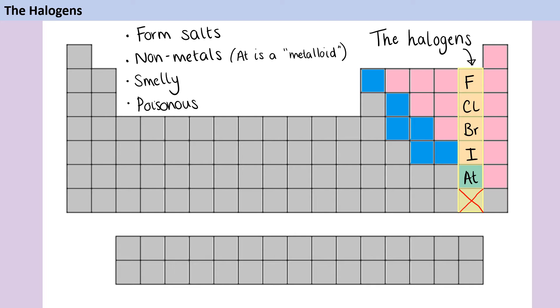As you go down the group, the boiling points of the halogens increase, so they exist in different states. Fluorine and chlorine both exist in nature as gases. Bromine has a slightly higher boiling point, so at room temperature it doesn't have enough energy to boil, and that means that it's a liquid, one of only two in the whole periodic table.